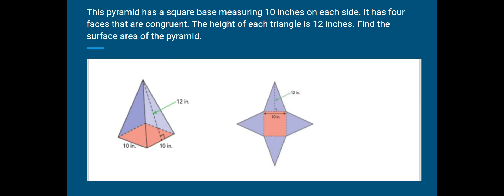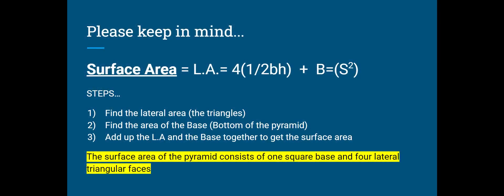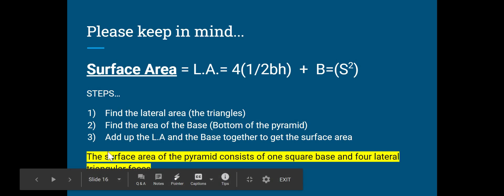So just a few things to keep in mind before you pause this video and try this on your own. Find FSS, which is formula, substitute, and then solve. Keep that in mind. Something else to keep in mind is the actual formula for surface area. And then you have some steps here. Find the lateral area first. Then you find the area of the base. Then you add up the lateral area and the base together to get the surface area. So pause this video and try it on your own. Go.